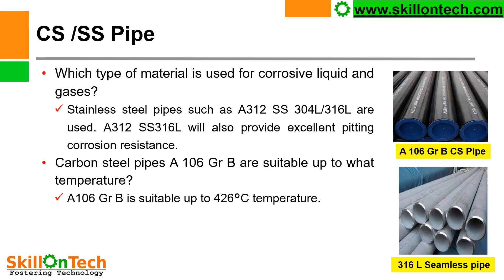CS (carbon steel) and SS (stainless steel) pipes — you can see a picture of A106 grade B carbon steel pipe and a picture of 316L seamless pipe. 316L is a low-carbon stainless steel pipe. For corrosive liquids and gases, stainless steel pipes are used, such as A312 SS-304L and 316L. A312 SS-316L also provides excellent pitting corrosion resistance. Carbon steel A106 grade B pipes are suitable up to 426°C temperature.